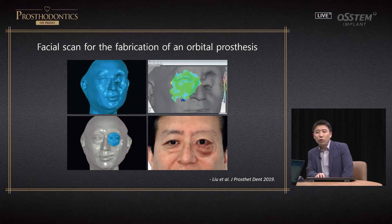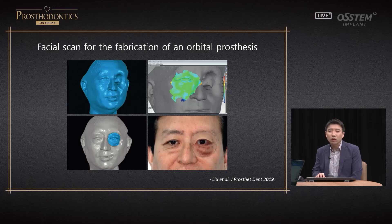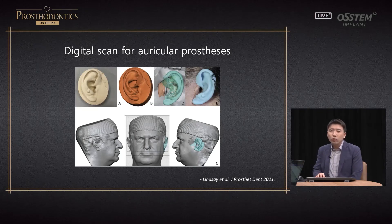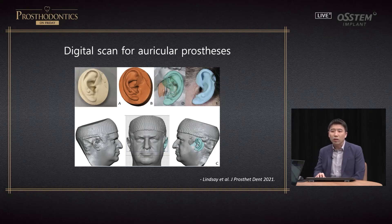In dentistry, facial scan data is used for maxillofacial prosthesis — for example, orbital prosthesis. If there is a defect, you can mirror the form of the eye on the other side and complete a prosthesis. The same applies to ear prosthesis: if the ear on one side has complete form, you can scan it and fabricate the prosthesis for the other side.